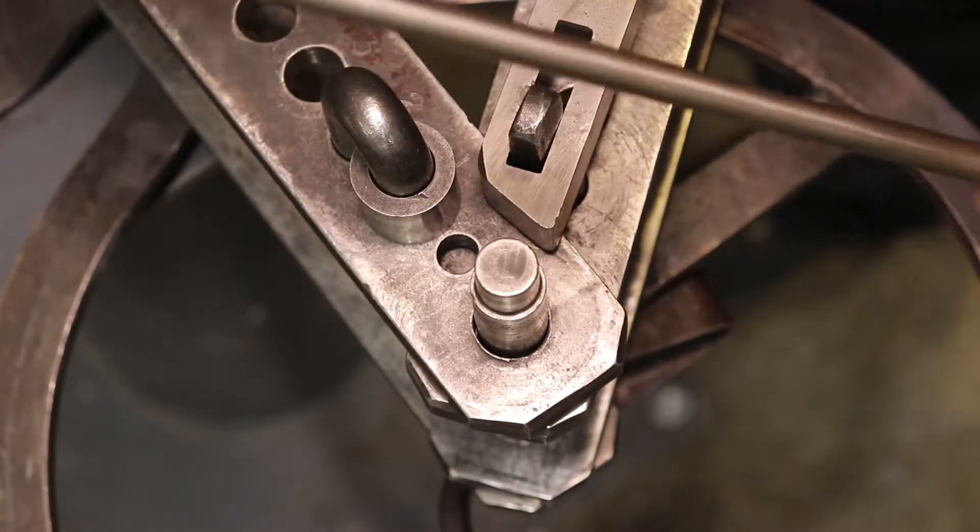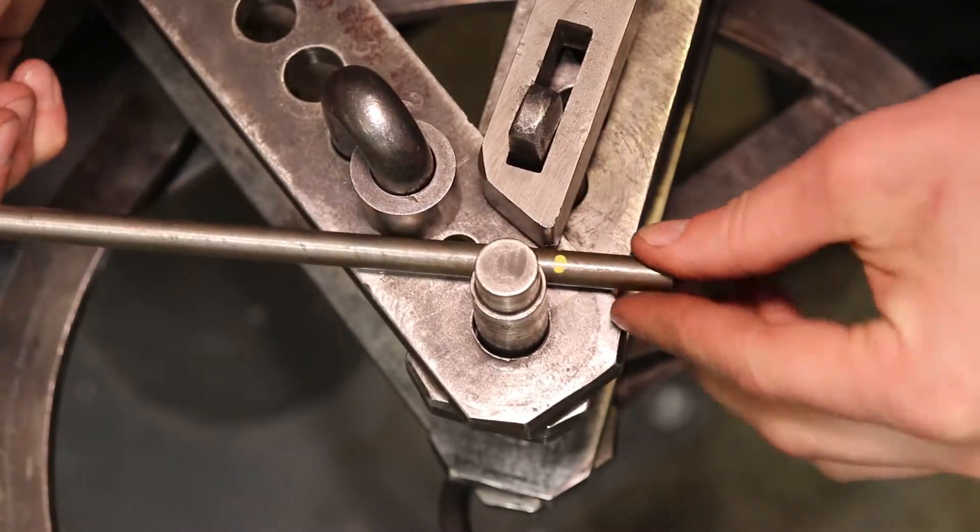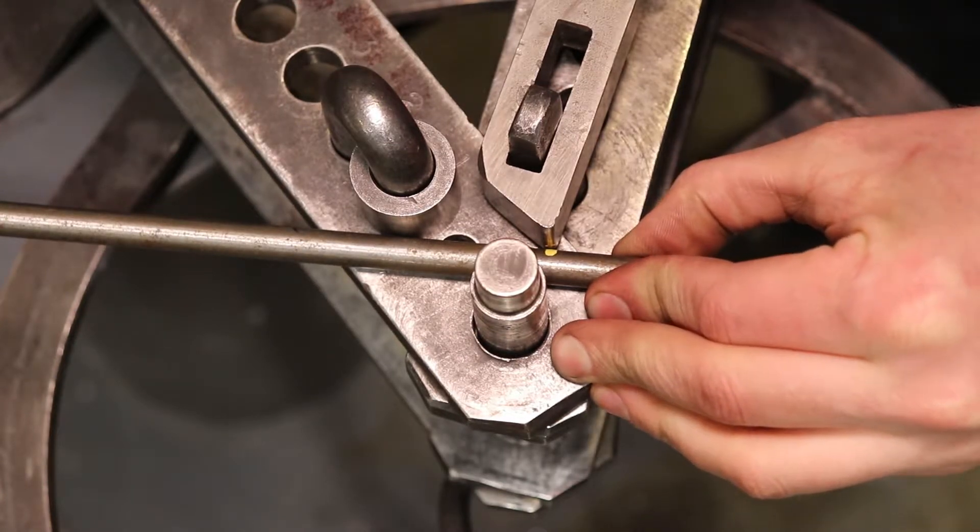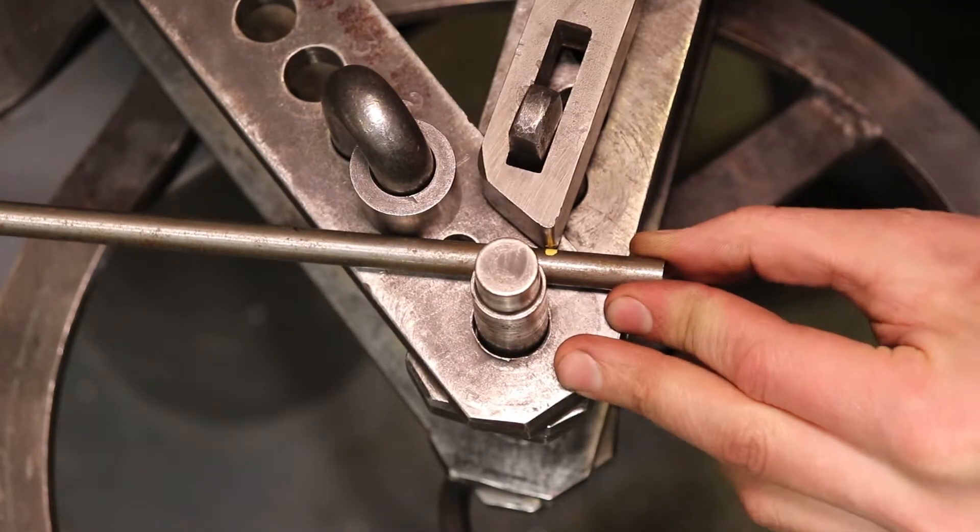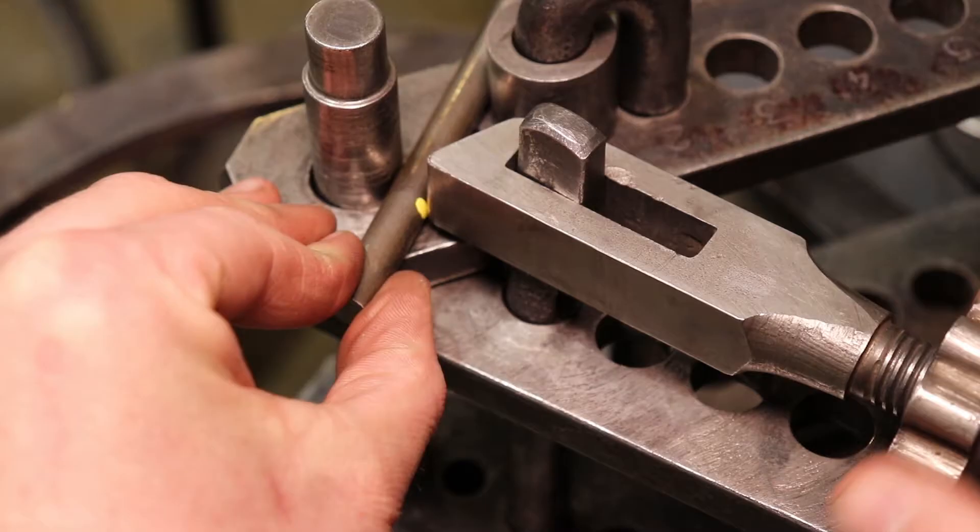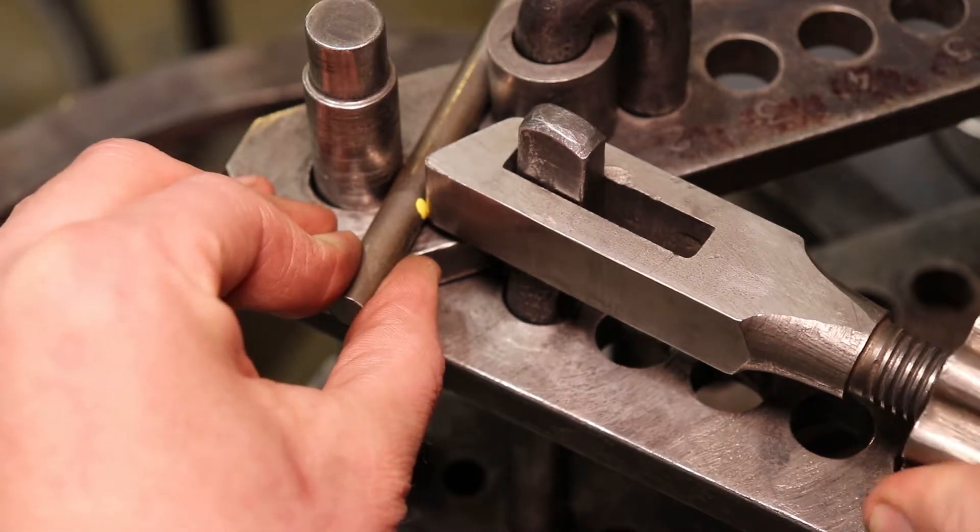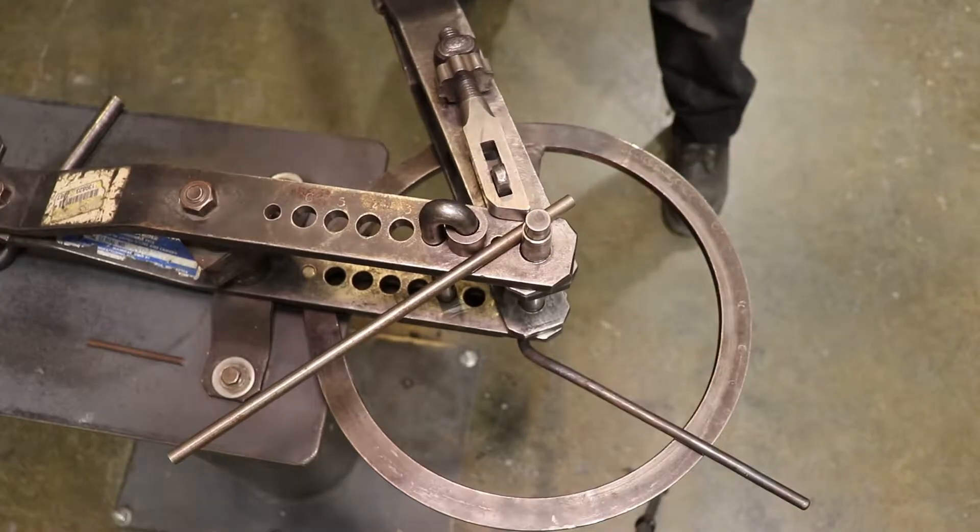Then I take my material back over to the bender, line up my witness mark nice and carefully, try and dial in all the parts back to where they were for that test bend. Exactly as I had them before, take your time with this, and you can see that I'm applying the same amount of pressure.